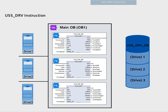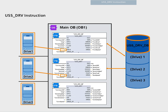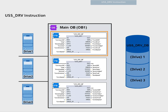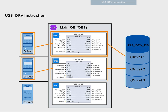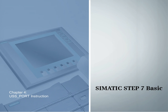When the USS drive is executed for the first time, the instance data block indicated by the USS address drive parameter is initialized. Only after this initialization can the USS port function start communicating with the drive of the indicated drive number. The communication with the drives occurs after the execution of USS port. USS drive only configures the requirements to be sent and evaluates the data received after previous requests. Chapter 4 – The USS Port Function.